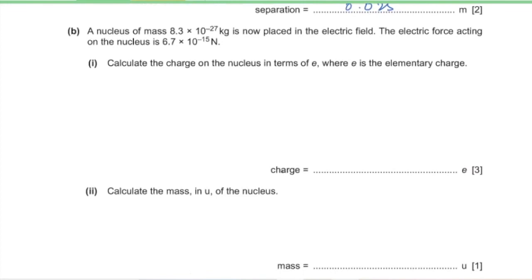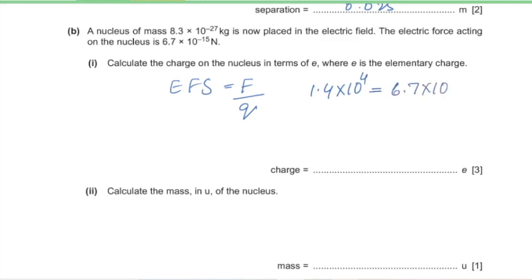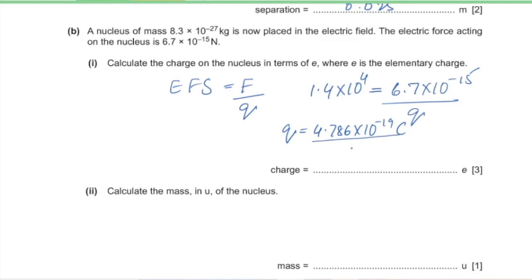Part B: a nucleus of mass 8.3 × 10⁻²⁷ kg is placed in the electric field. The electric force on the nucleus is 6.7 × 10⁻¹⁵ N. Part 1: calculate the charge on the nucleus in terms of e. Using E = F/Q: 1.4 × 10⁴ = 6.7 × 10⁻¹⁵ / Q, giving Q = 4.786 × 10⁻¹⁹ C. Dividing by e = 1.6 × 10⁻¹⁹ C gives a charge of 3e.